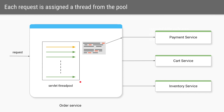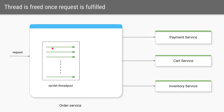Let's say this order service is built using Spring Boot, which internally uses Tomcat. This Tomcat will have a servlet thread pool, let's say of size 200 threads. On every request, a thread will be assigned to serve that particular request. In that thread we will do the logic, which includes calling the remote service — the payment service — and once the payment service returns the response, the logic is completed and we return the response back to the caller, at which point the thread is freed again to serve any other requests.